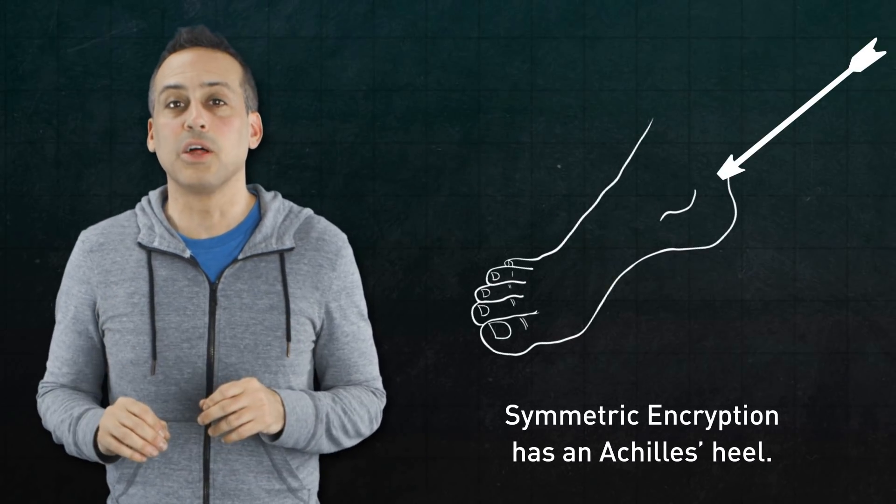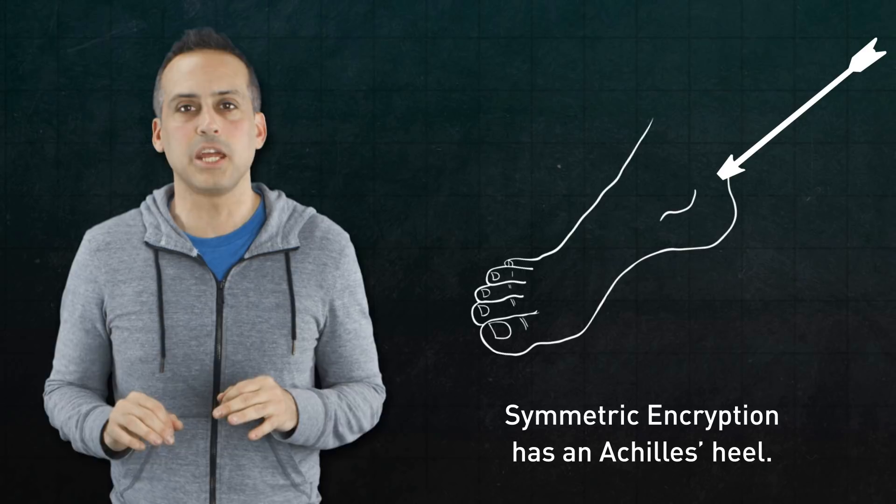Now, I know what you're thinking. If all of this is true, then why is everyone always like, RSA this and prime numbers that? I mean, if symmetric encryption is really so unbreakable, why bother with anything else? Well, you may have already noticed that symmetric encryption does have an Achilles heel, and it's not mathematical in nature.